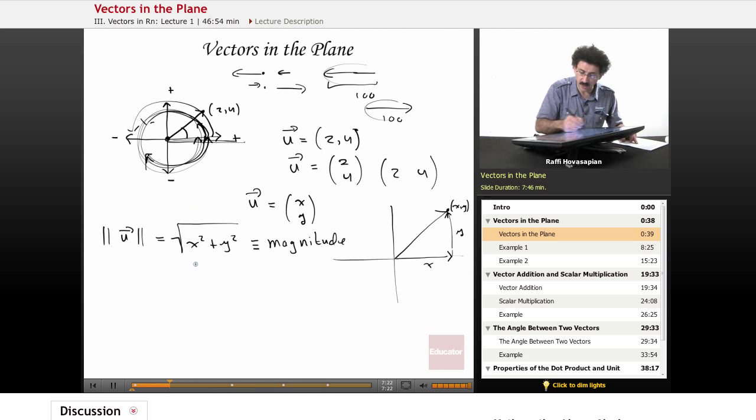Now we can also define this angle. So, if we call this angle theta, well, we have y, we have x, the relationship between theta is tangent.